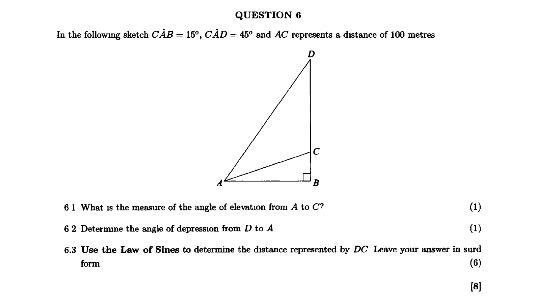This is the actual question paper. We are going to look at this question for today. Question 6 says that in the following sketch, angle CAB equals 15 degrees and angle CAD equals 45 degrees. AC represents a distance of 100 meters.